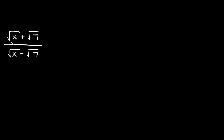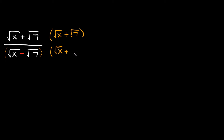Here we have the square root of x plus the square root of 7 over the square root of x minus the square root of 7. This one is different because we have an expression in the denominator. To rationalize it we have to multiply by the conjugate — that means multiplying by this same expression but with the sign changed. Since we have a subtraction sign in the denominator, we change it to addition. So we multiply the top and the bottom by the square root of x plus the square root of 7.